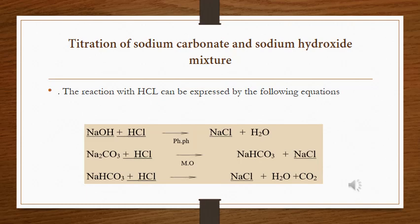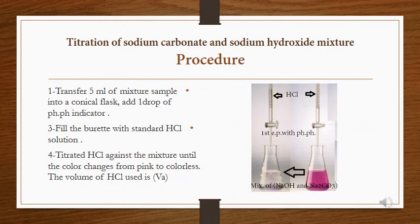The procedure: transfer 5 mL of the mixture into a conical flask. We call it a mixture because it contains both NaOH and Na2CO3 — the NaOH has absorbed CO2 from the atmosphere, forming a mixture of NaOH plus Na2CO3 in the flask.